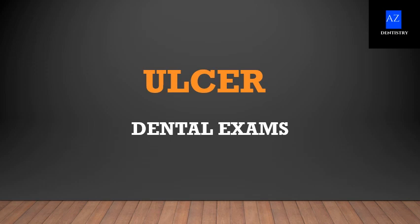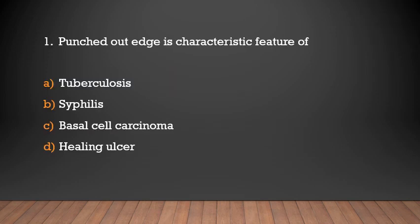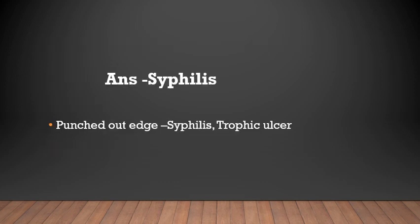Hello friends, welcome to A to Z Industry. This video focuses on important MCQs related to ulcers. Punched-out edge is a characteristic feature of: tuberculosis, syphilis, basal cell carcinoma, or healing ulcer? The answer is syphilis. Punched-out edge is present in syphilis and trophic ulcer.